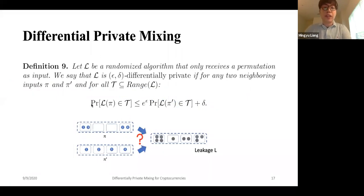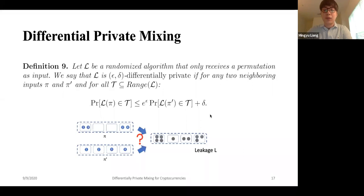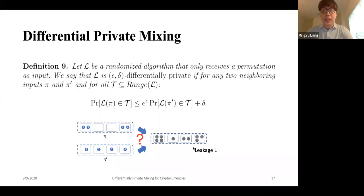Here is the formal definition for differential private mixing. Let L be a randomized algorithm that receives a permutation as input. We say L is (ε, δ)-differential private if for any two neighboring input permutations π and π', and for any subset of all possible outcomes, the probability that it's generated by π is almost as likely as it's generated by π'. The effect is that this makes it hard for the adversary, given the leakage L, to determine whether it came from any pair of neighboring permutations.